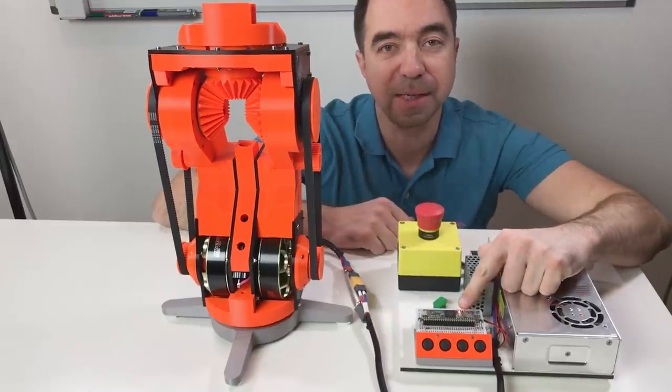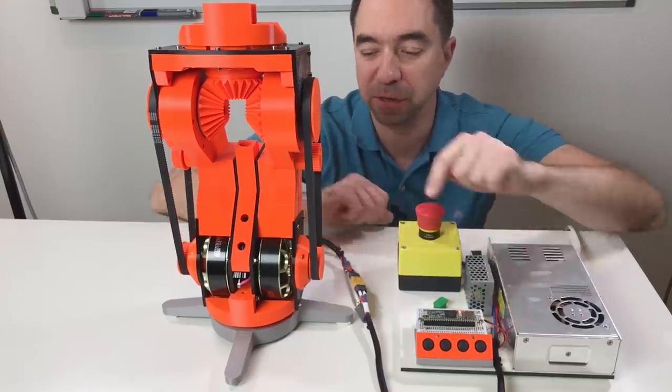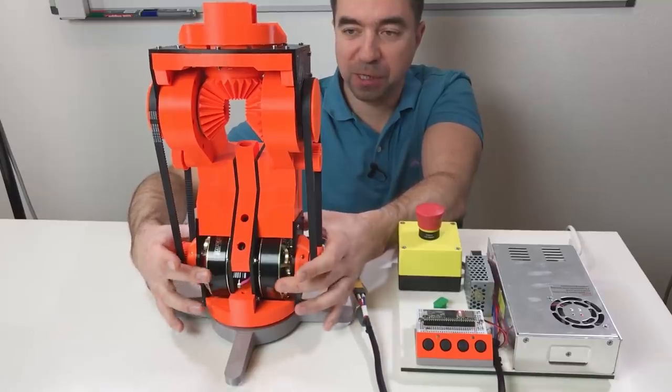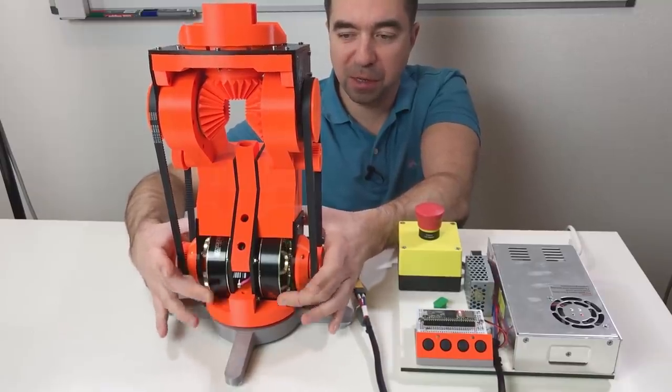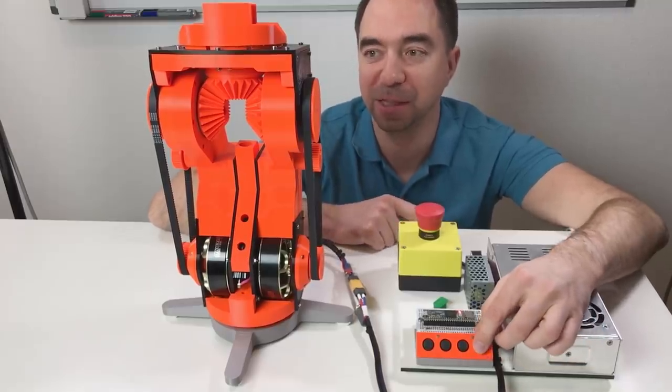This LED indicates that the motors are calibrated and they hold their position. So if I try to rotate the motors, they come back to their position. Now I can move it with the joystick. Let's do this.